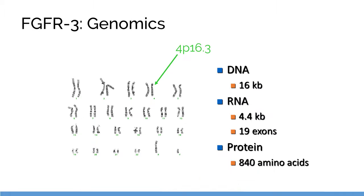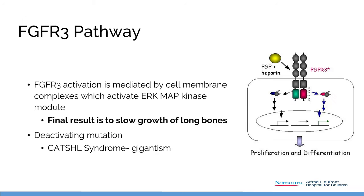In decreasing severity, the thanatophorics die and hypochondroplasia is the most mild. It is a 4p16 gene abnormality that was identified in the 1980s, and the pathway is very interesting.